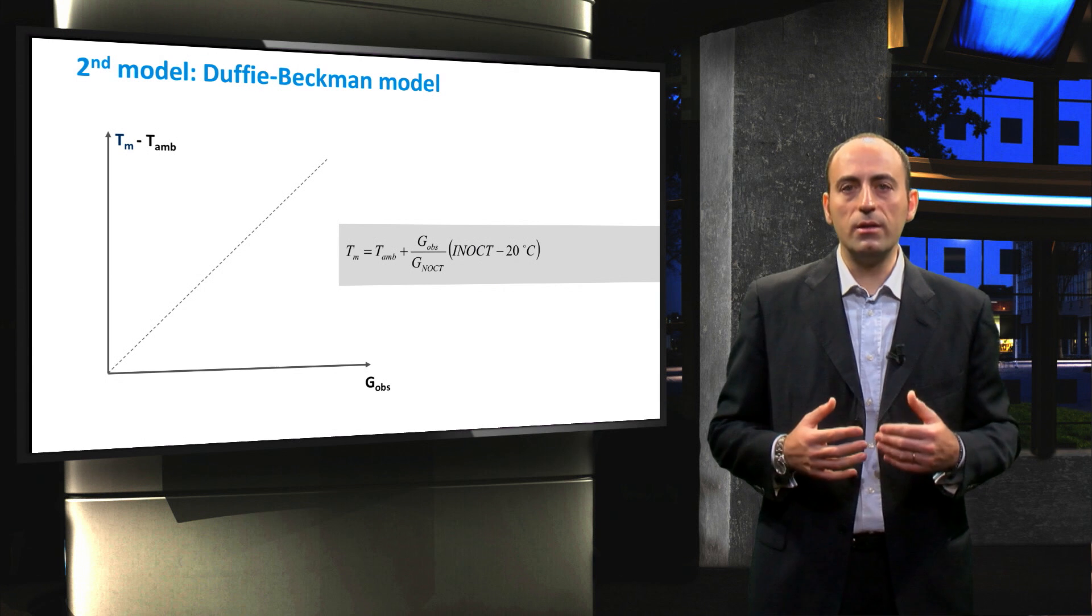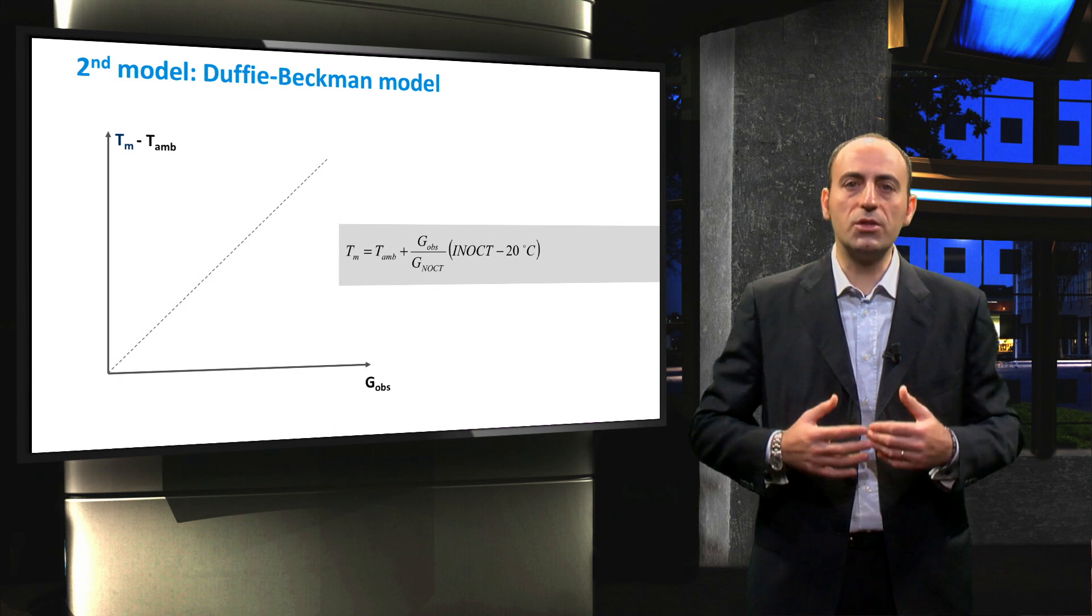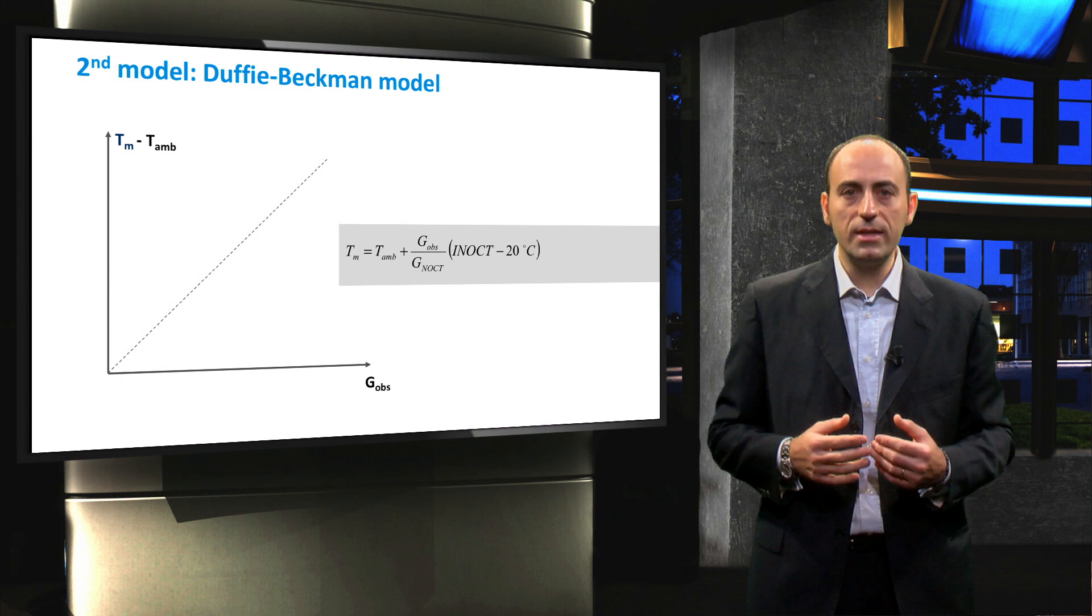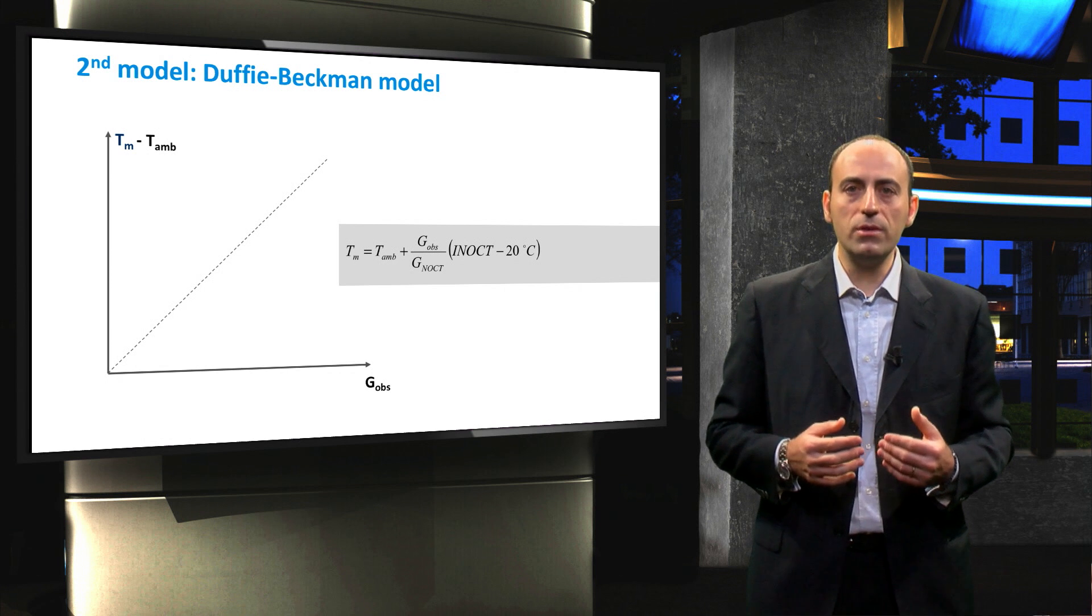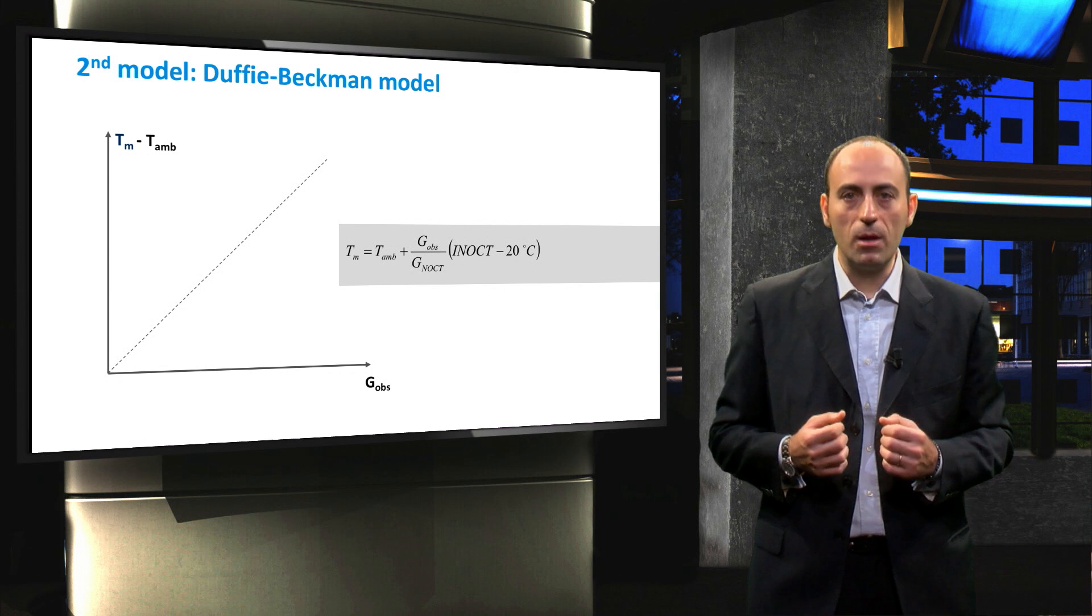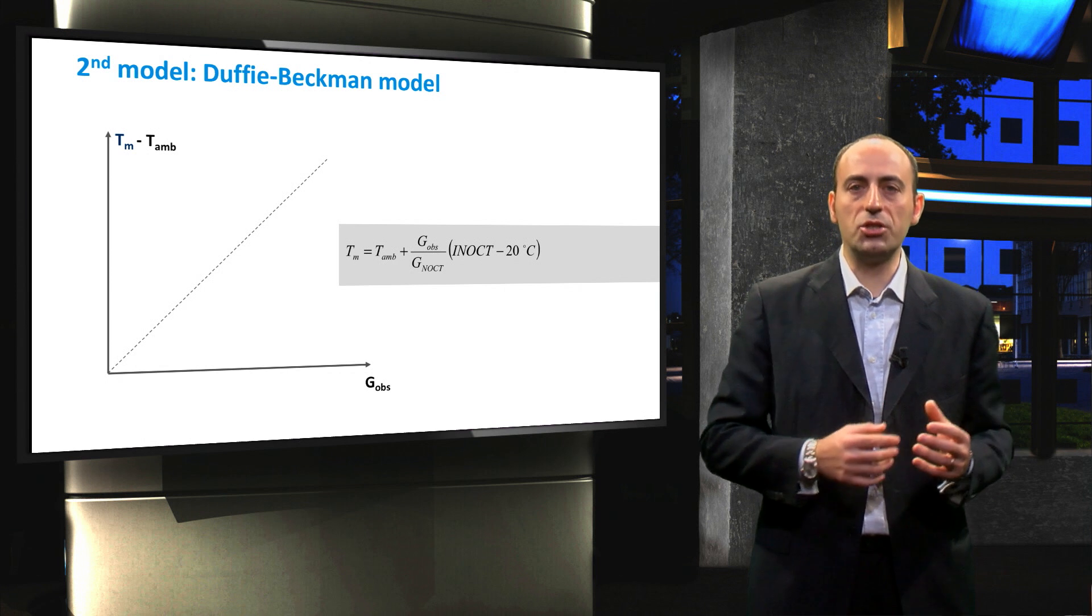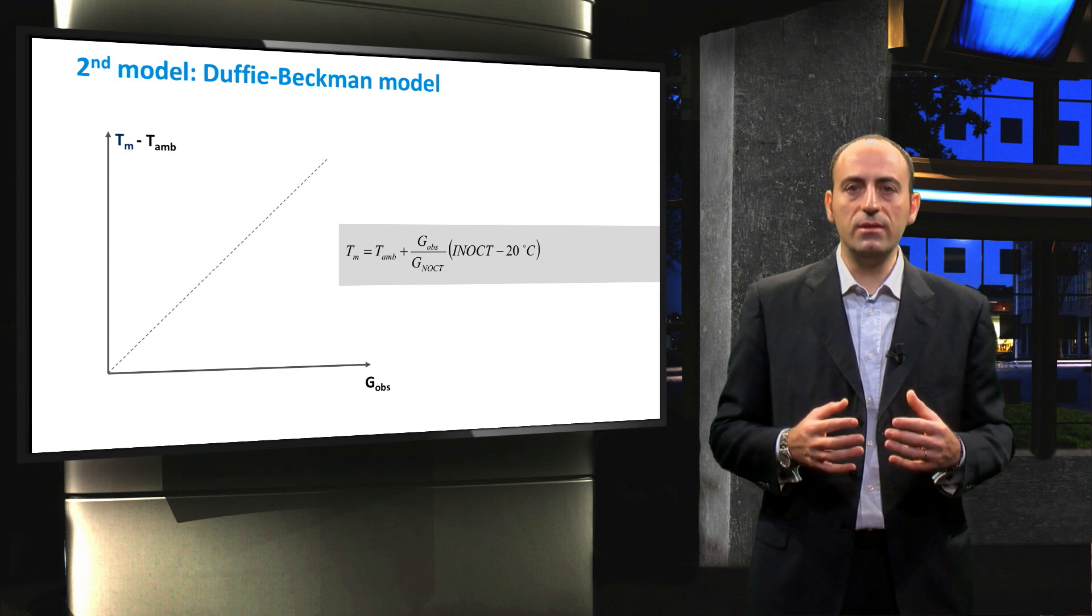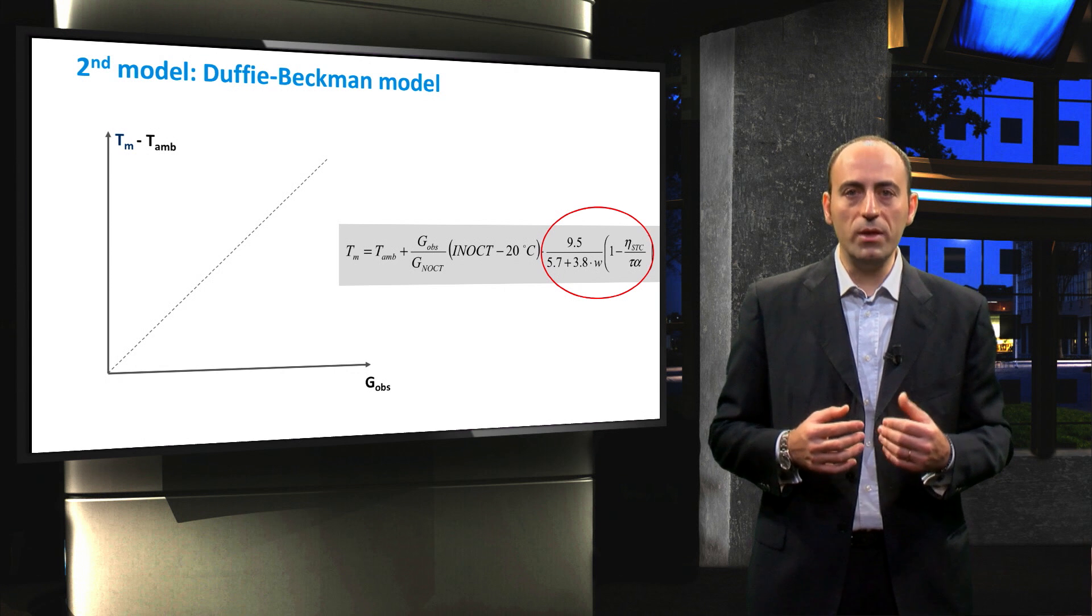Therefore, Duffin-Begman proposed a tweak on this empirical model, which is basically a correction accounting for the presence of wind. So, in this second thermal model, next to the basic equation, a factor was added that is a function of the wind speed.